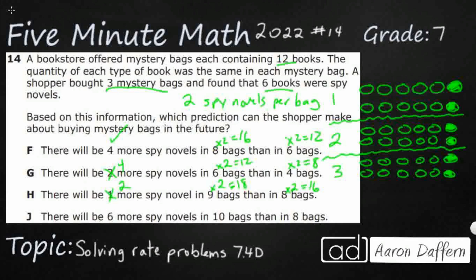Answer choice J says six more spy novels in ten bags than in eight bags. Ten bags gives 20, and eight bags gives 16 — that's a difference of four, not six. So each of the answer choices G, H, and J are close but not quite right. Our answer is F: in eight bags there are 16 spy novels, in six bags there are 12, so that means there are four more. The answer is F.